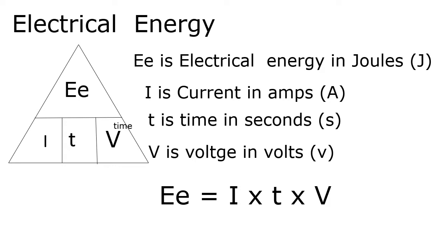Electrical energy here is equal to current times time times voltage. Electrical energy is measured in joules, current is measured in amps, time is always measured in seconds, and voltage is in volts. So that's I × t × V, which is electrical energy: current times time times voltage. It should be quite straightforward to remember.